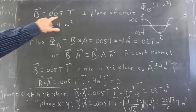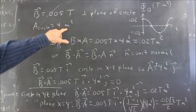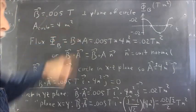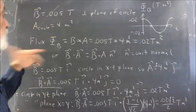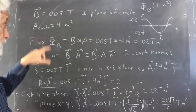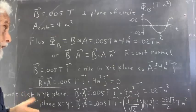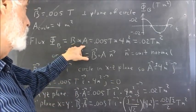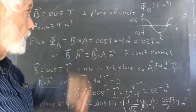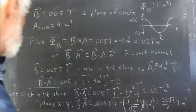Let's consider a magnetic field at 0.005 Tesla perpendicular to the plane of the circle, where the area of the circle is four square meters. Then the flux is going to be the entire magnetic field multiplied by the entire area of the circle — just magnetic field times area. We use capital phi (Φ_B) to represent flux of the magnetic field, to distinguish it from the flux of an electric field. Φ_B equals the product of the magnetic field and the area, giving us 0.02 Tesla·meters squared.